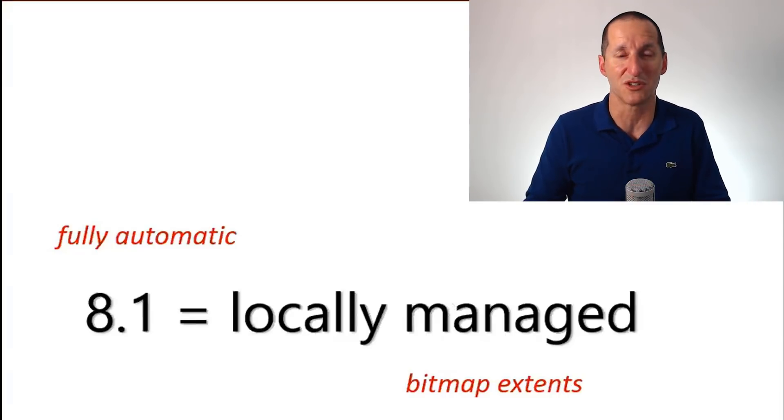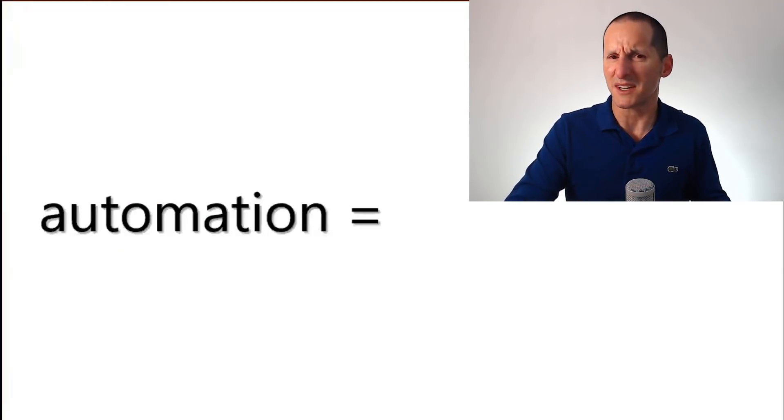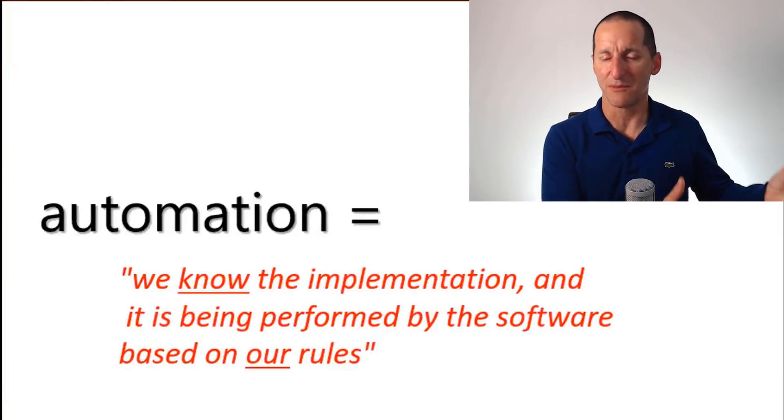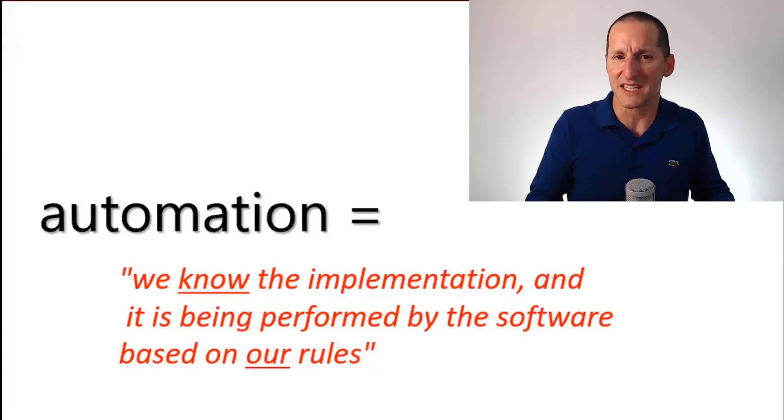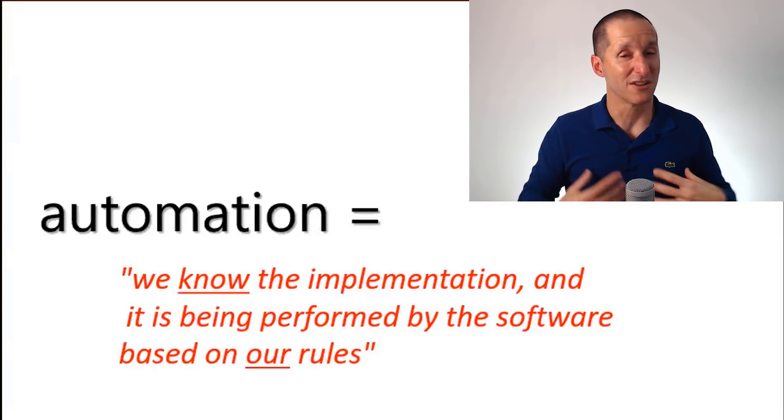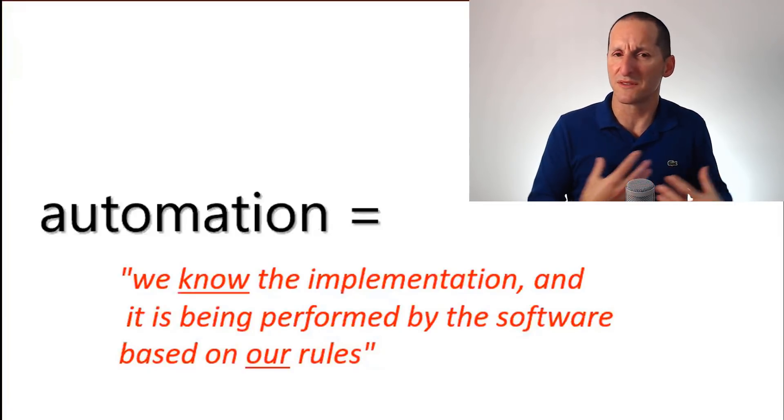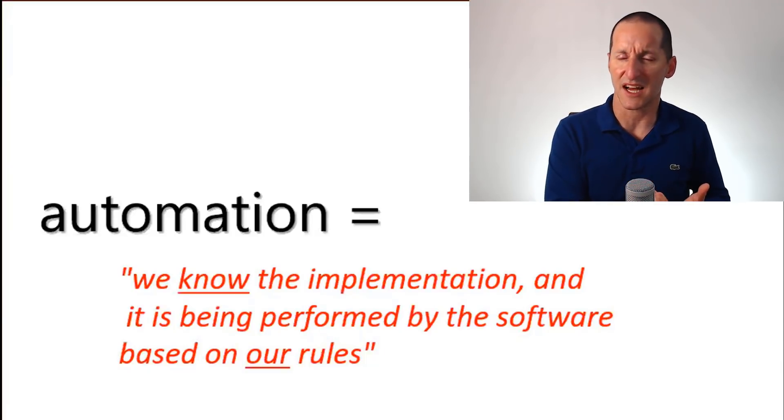We had this degree of automation but we know how extents work. Automation for me is we sort of know the implementation - it's being performed by the database, no longer by us, but we define the rules. We define the extent sizes with LMTs, etc. That's my sort of loose definition of using the database definition of automation.